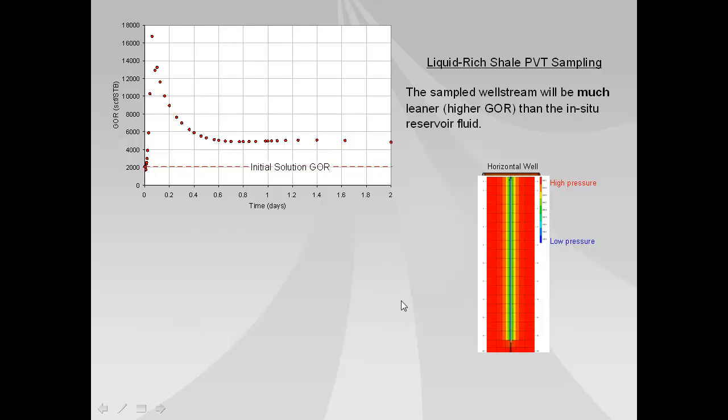And the reason for that is because it is a fundamental characteristic of producing at an elevated but constant gas oil ratio for long periods of time until the effects of outer boundaries are felt. So basically the infinite acting performance of a liquid rich shale well is a constant gas oil ratio.